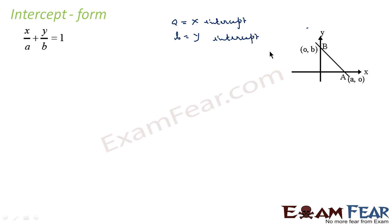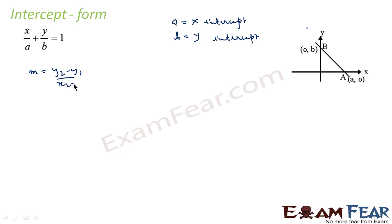If we know the x and y intercepts, we can write the equation as x/a + y/b = 1. We can also prove this equation. We know two points: (a, 0) and (0, b). Since we know two points, we can form the equation. First, let's find the slope. Slope = (y2 - y1)/(x2 - x1) = (b - 0)/(0 - a) = -b/a.